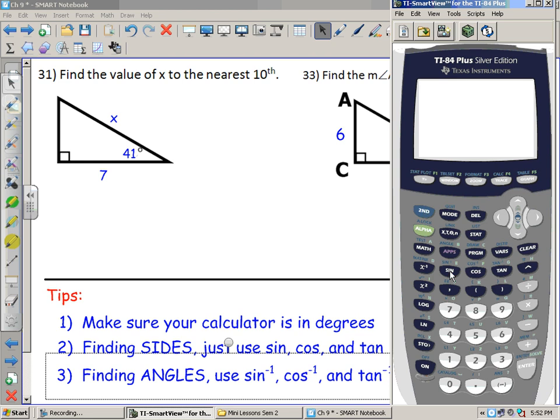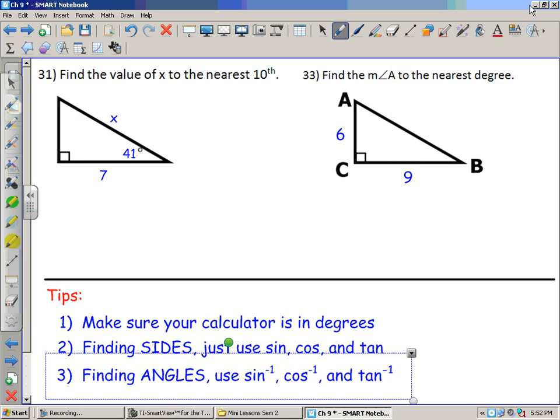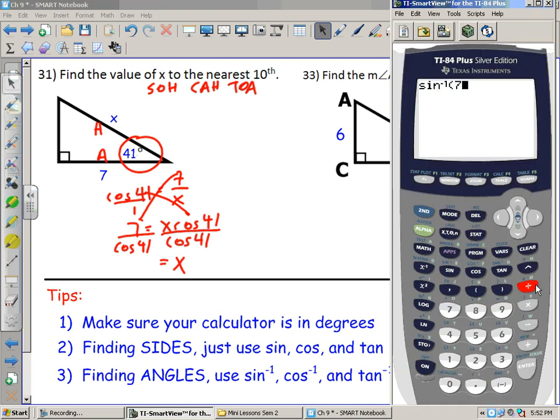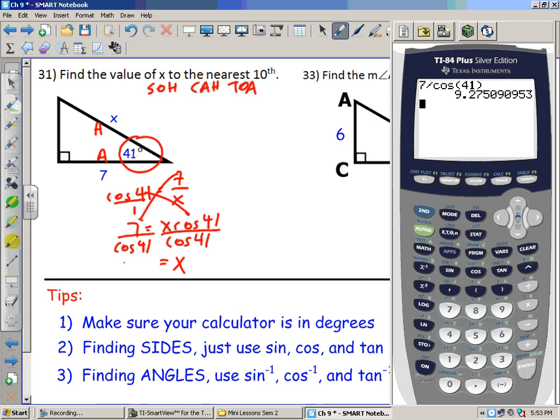For this particular problem, I'm looking at an angle. I circle it. I label the sides. This is my adjacent side, this is my hypotenuse. So I'm looking at A and H. So CAH tells me I'm going to use cosine. Cosine of 41 equals 7 over x. Cross multiply. Basically what I end up doing is I put this over 1 and I cross multiply. So 7 equals x cos 41, or 7 divided by cos 41 equals x. So I do this in my calculator. I'm going to take 7 divided by the cos of 41. And it should give me what x is, about 9.28. So 9.3 to the nearest tenth.